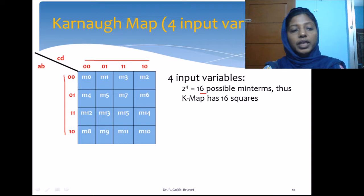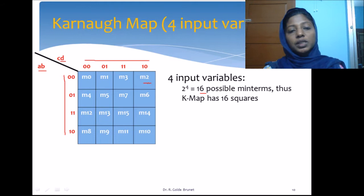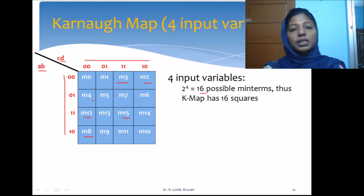We follow the same Gray code sequence here as well. A and B are the first 2 variables and C and D are the next 2 variables. When we write the minterms you should be a little careful, because it is M0, M1, M2, M3, then M4, M5, M6, M7, and then we jump to write M8, M9, M10, M11, and then M12, M13, M14 and M15. That is 0 to 15, so totally 16 minterms in this Karnaugh map.